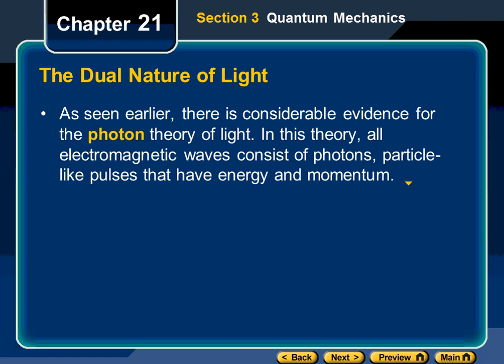In this theory, all electromagnetic waves consist of photons — particle-like pulses that have energy and momentum. Things that have momentum must have speed and mass. So we are saying that light, or all electromagnetic waves, is composed of stuff that has mass.